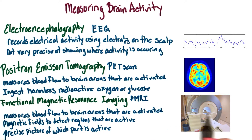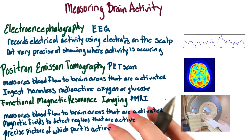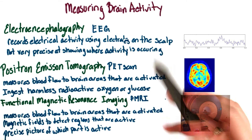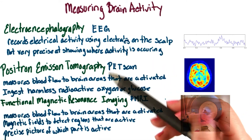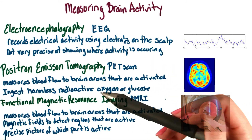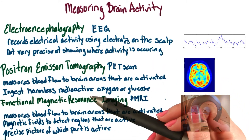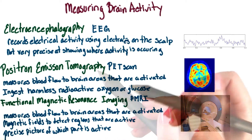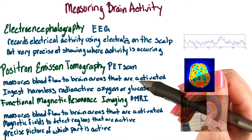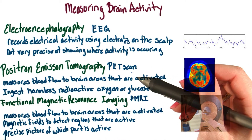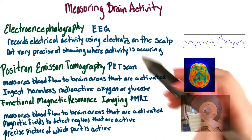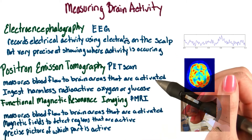This is what a typical fMRI machine looks like. Now, it's really important to point out that none of these techniques directly measure neural activity — they all measure it indirectly. There are ways of measuring individual neurons, but because it involves surgery, it's almost never used on humans.